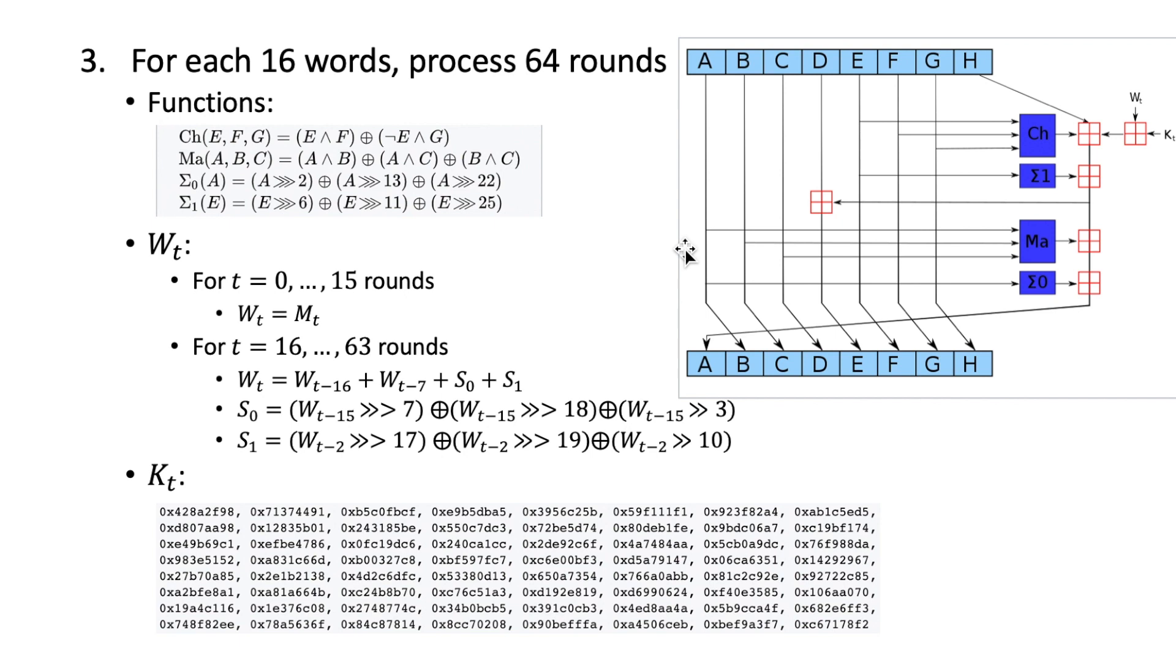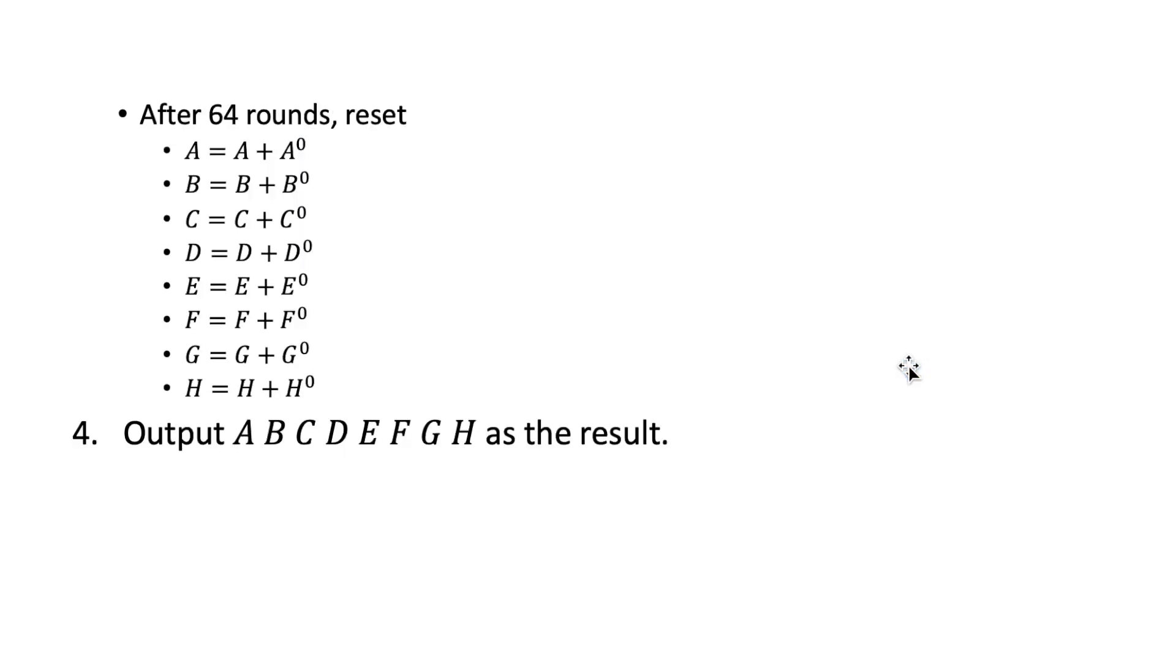After we process all the message words, we're going to output the values in these eight buffers as the final result. So each has 32 bits, so we have 256 bits as the hash value of the original message.